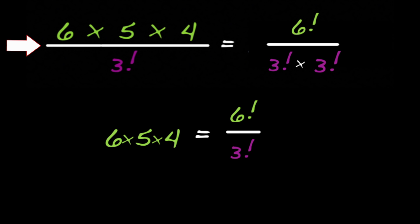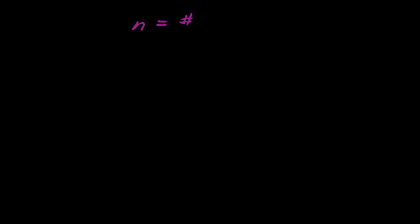To generalize this for other numbers of actors, let n be the number of actors we can pick from, and let k be the size of the cast.